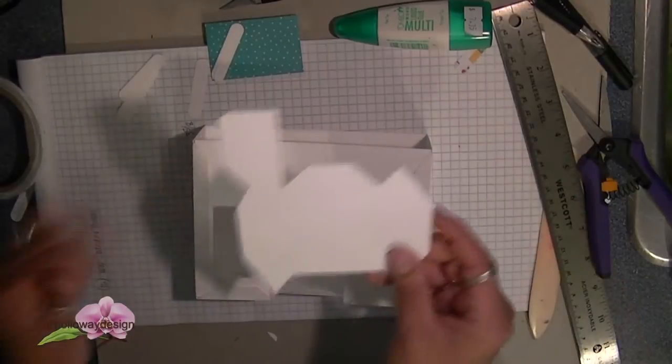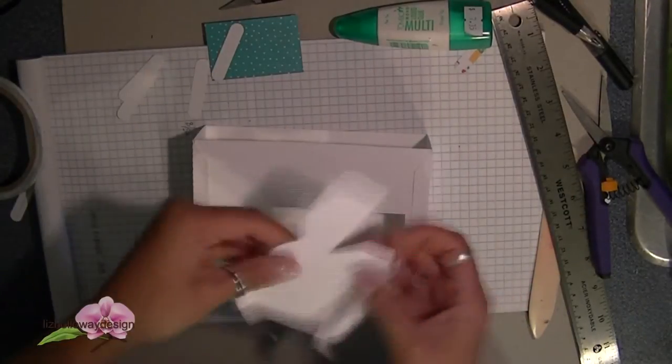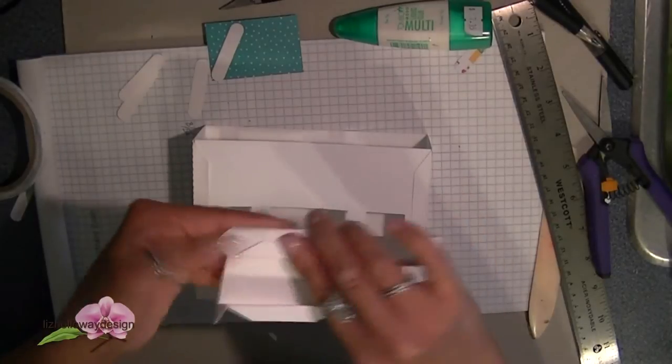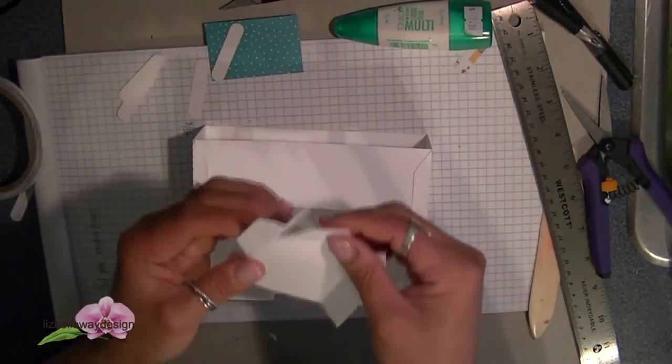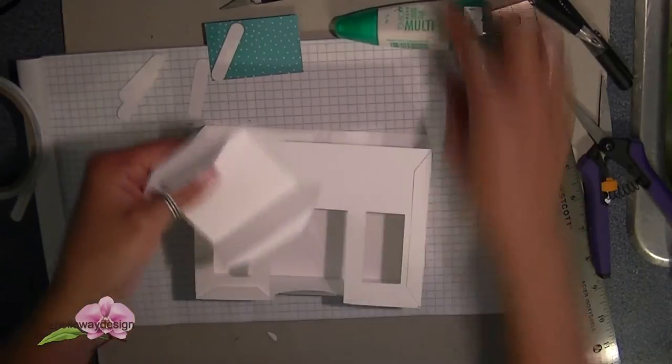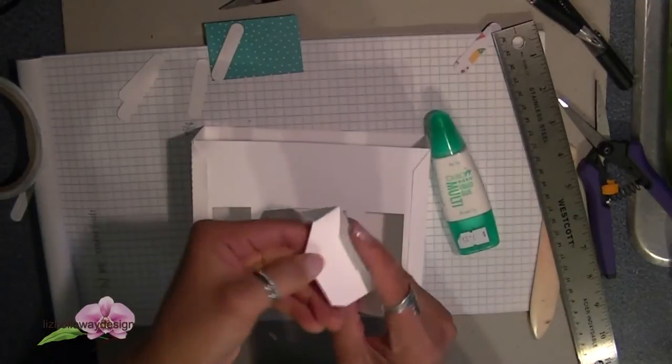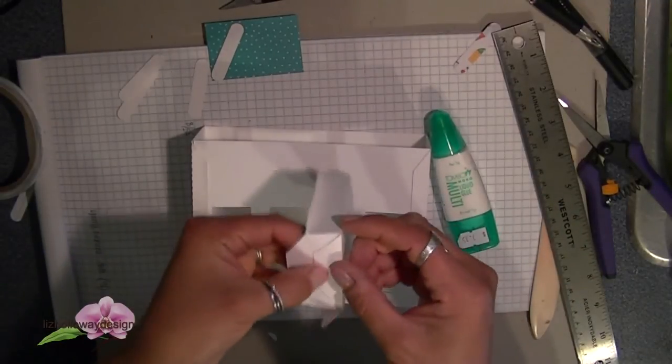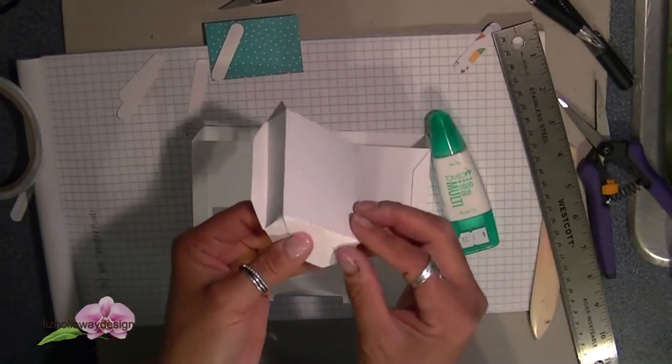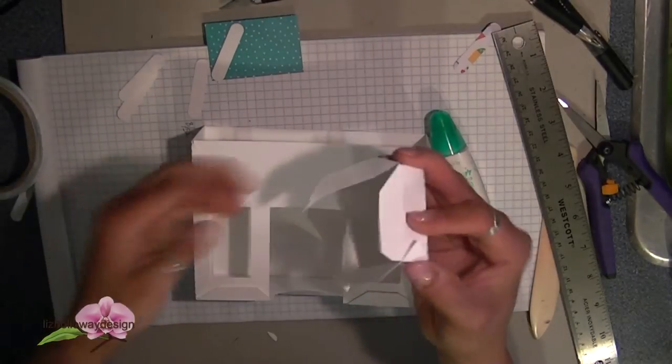Once it's down, next bring in your recessed doorway. Starting at the tab on the right side, valley fold, then mountain fold the next score line, valley fold the next score line, and mountain fold the next score line. When you have all the folds in place, flip your bottom tabs up and the top tabs mountain fold them down.